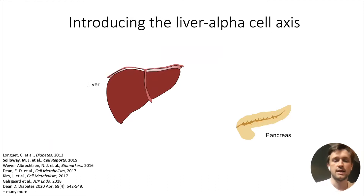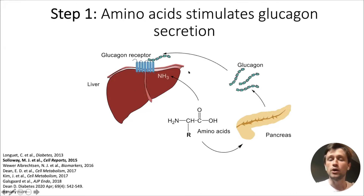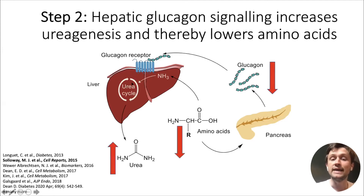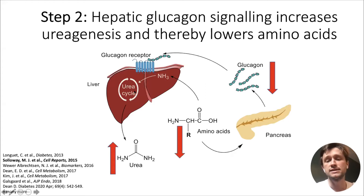What is the liver-alpha cell axis? Many different groups have been involved in characterizing it. One key study by Soloway and colleagues published in Cell Reports demonstrated that amino acids and glucagon feed back on each other's secretion, and in animal models, perhaps also proliferation. The idea is that certain glucagonotropic amino acids stimulate glucagon secretion from pancreatic alpha cells, and glucagon binds to its cognate receptor in liver cells. Within the liver, glucagon enhances a biochemical process known as the urea cycle — required to dispose of toxic ammonia from amino acids, with urea as the byproduct.